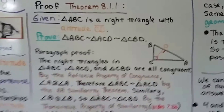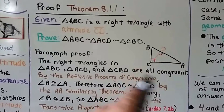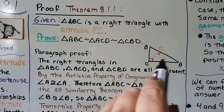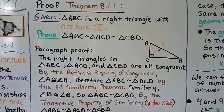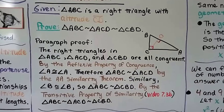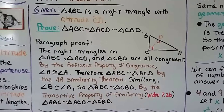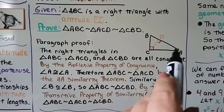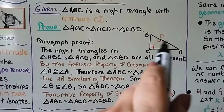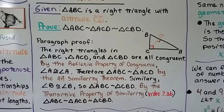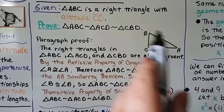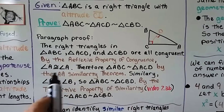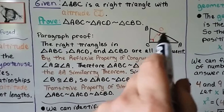The paragraph proof says: given that triangle ABC is a right triangle with altitude CD, we need to prove that ABC is similar to ACD, which is similar to CBD. The right angles in triangle ABC, ACD, and CBD are all congruent. By the reflexive property of congruence, angle A is congruent to angle A — the angle A in the big triangle is congruent to the angle A in the smaller triangle.